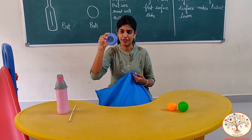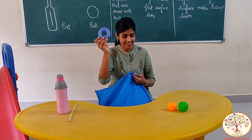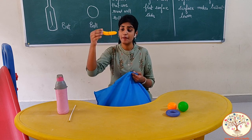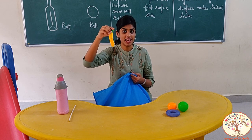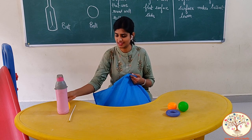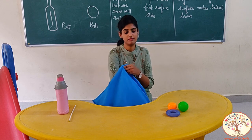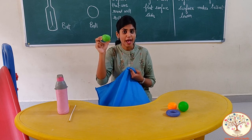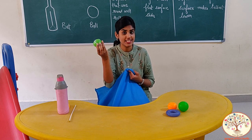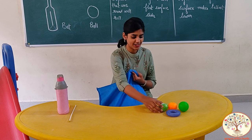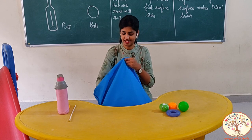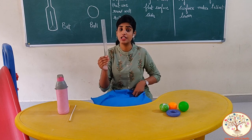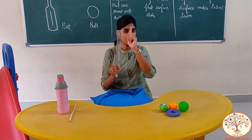Ring — ring is round. Banana — banana is long. Cabbage — cabbage is round. Scale — scale is long.